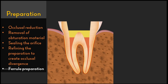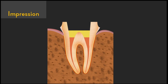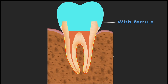The critical step in doing an endocrown is to get an impression without any defects. Because this is an internal cavity, there are more chances that the impression can have an air bubble trapped inside. So the light-body impression material must be injected inside that preparation first, and then only the tray should be seated.